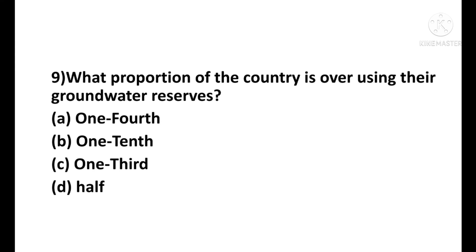Question number 9: What proportion of the country is overusing their groundwater reserves? Options are: one fourth, one tenth, one third, and half. The correct answer is Option C — one third.